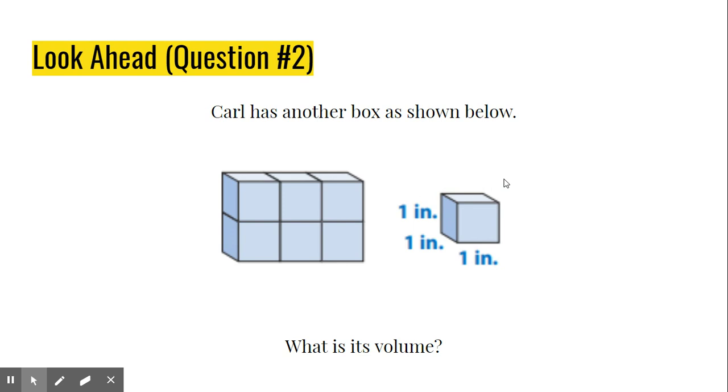All right, so Carl has another box. And this time, he's going to use cubic inches to measure it. Because his first box had each side as a foot, this one he's going to use a unit cube that has one inch sides, so cubic inches. Counting up all those boxes would give us six cubic inches.